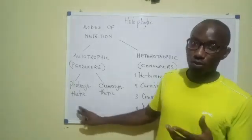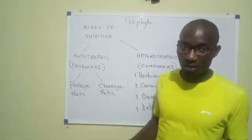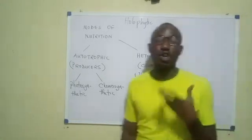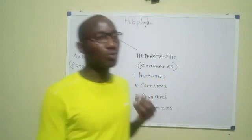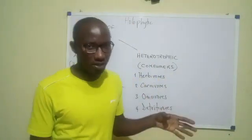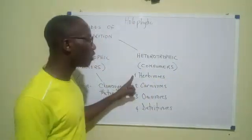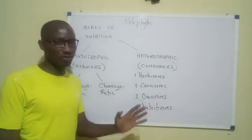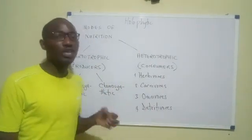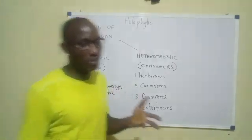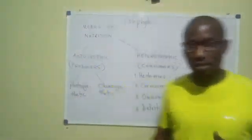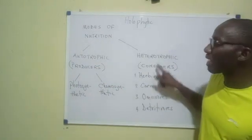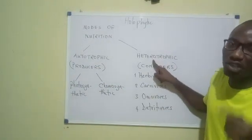In any case, they are both autotrophs — they are self-feeders, they make their own food. Now, for the heterotrophic organisms, the consumers that do not produce but only feed, there are some of them that feed on the autotrophs. They depend directly on autotrophs to meet their energy requirements, and these ones are called herbivores. So herbivores are heterotrophs that feed on plants.